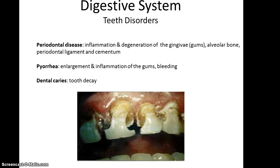Tooth disorders: there's periodontal disease, which is an inflammation and degeneration of the gingiva — the gums. It can worsen and also affect the alveolar bone, the periodontal ligament, and cementum, which can make the teeth fall out. Pyorrhea is an enlargement and inflammation of the gums themselves and often involves some bleeding. And then dental caries, which is basically tooth decay — this picture shows some really extreme dental caries.